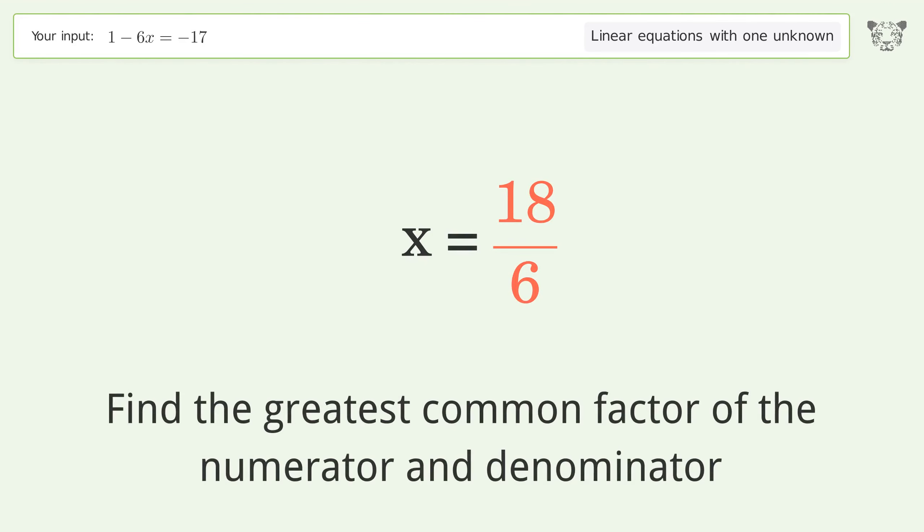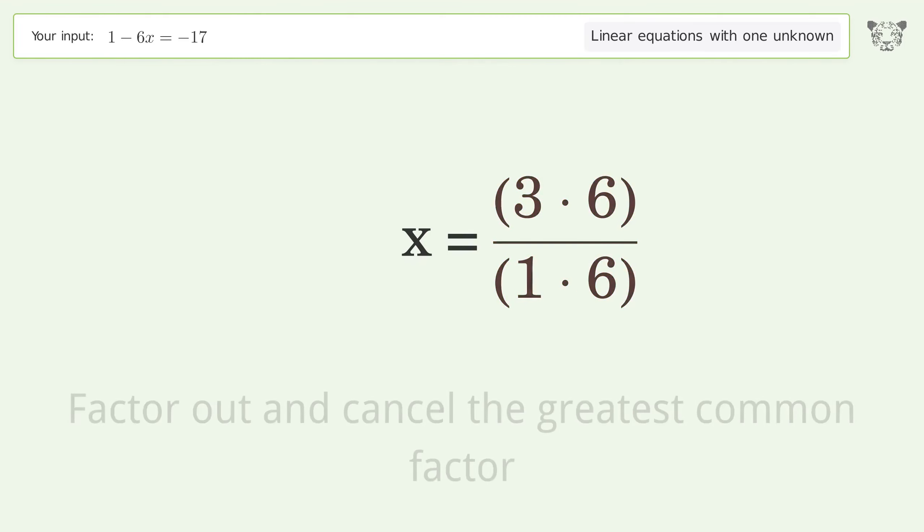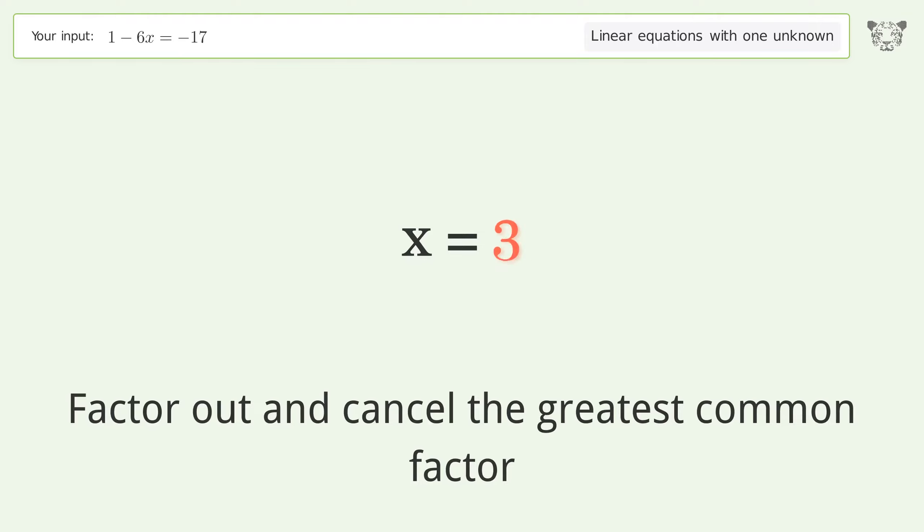Find the greatest common factor of the numerator and denominator. Factor out and cancel the greatest common factor. And so the final result is x equals 3.